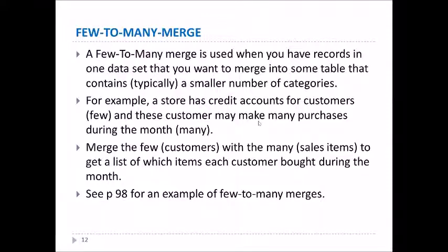Another way to merge is called few-to-many. In a few-to-many merge, we have records in one dataset that we want to merge to some table that typically contains a smaller number of categories. For example, suppose you have a store that has credit accounts for a few customers, and these customers make many purchases during the month. We want to merge at the end of the month our data so that the few customers merge with the many sales items to get a list of which items each customer bought during the month. You can see an example of this on page 98.